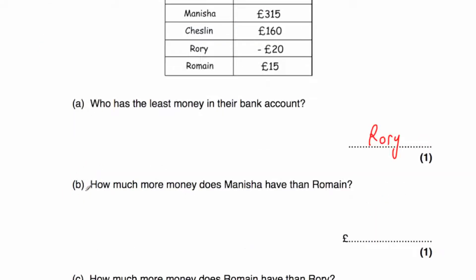Question B says how much more money does Manisha have than Romain? Manisha has £315 and Romain has £15. To work out how much more money Manisha has than Romain, we just need to take away the values. So we do 315 subtract 15, and that's equal to 300. So Manisha has £300 more than Romain.